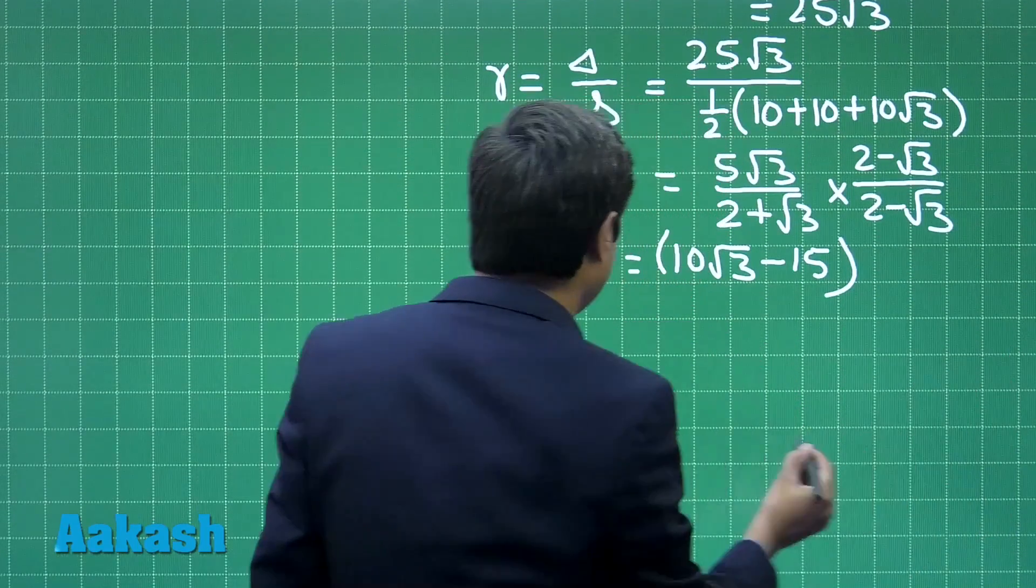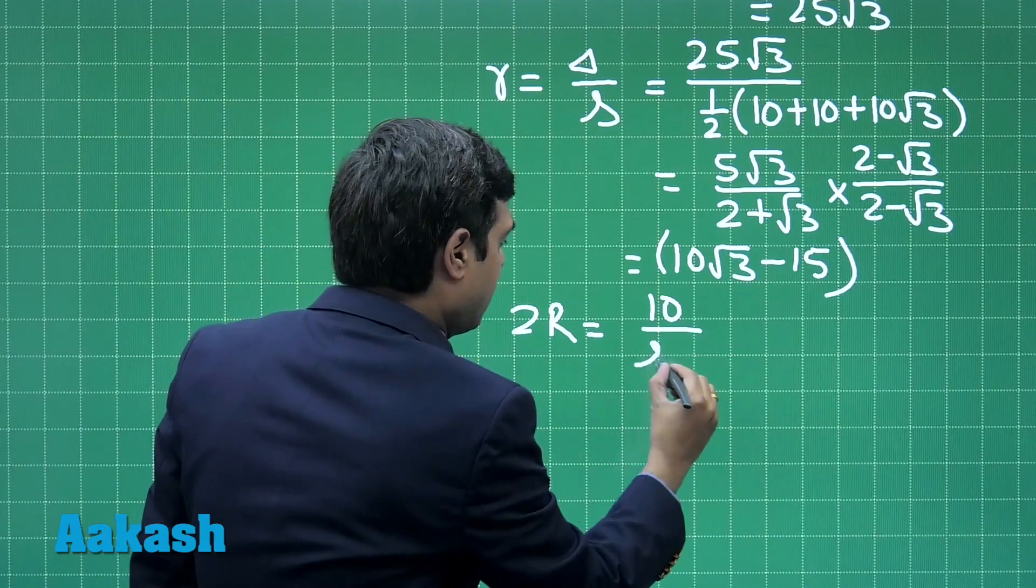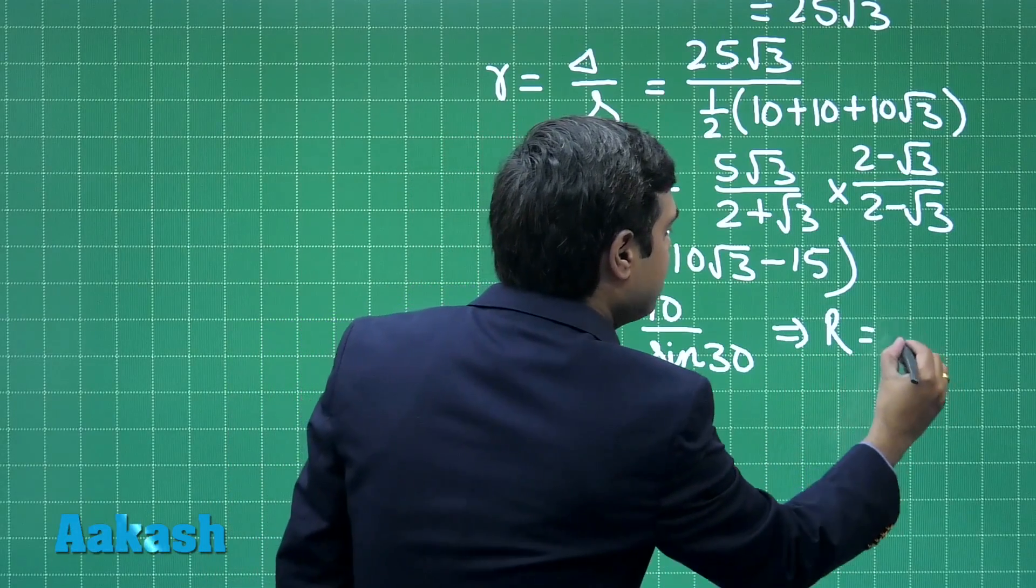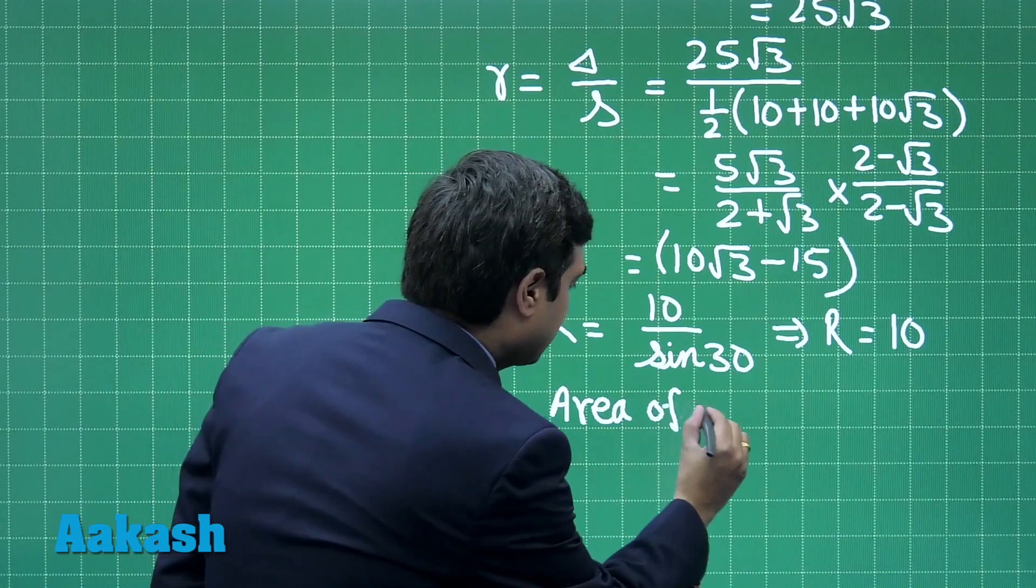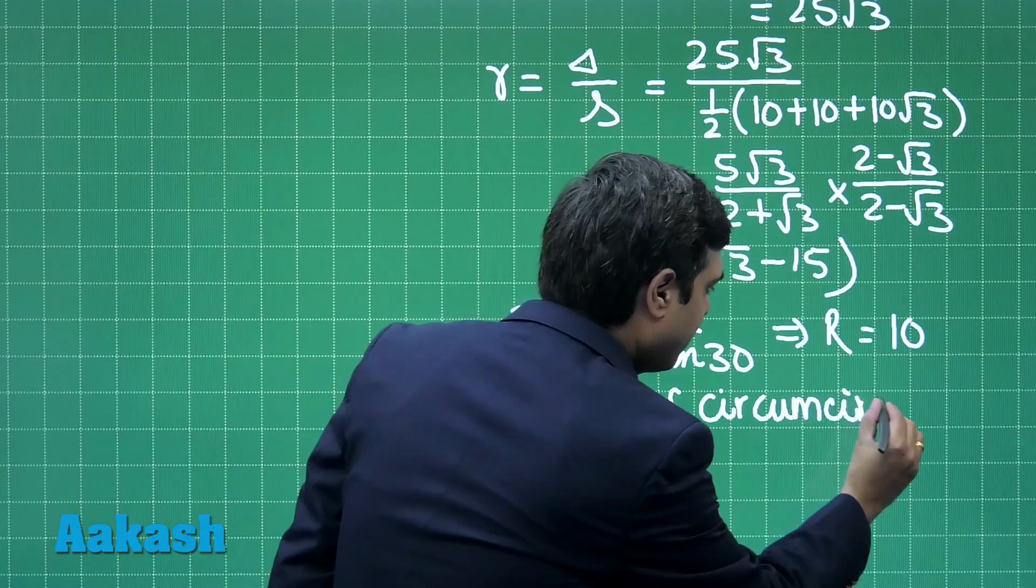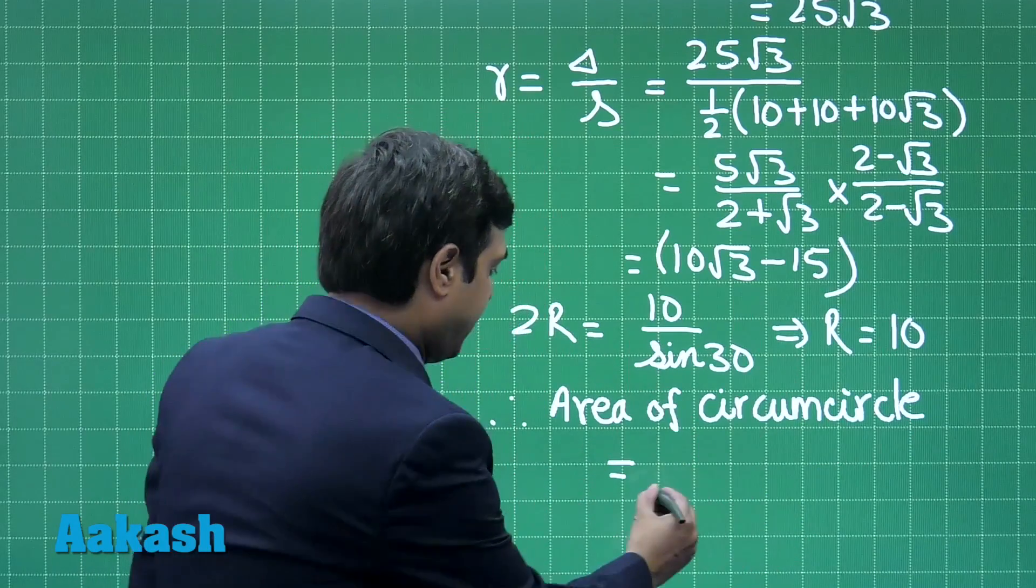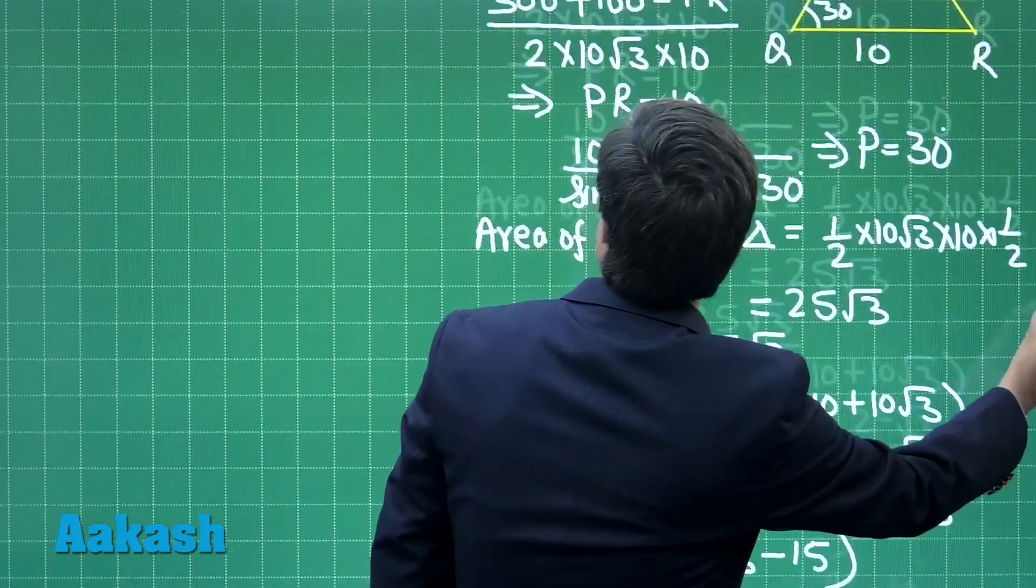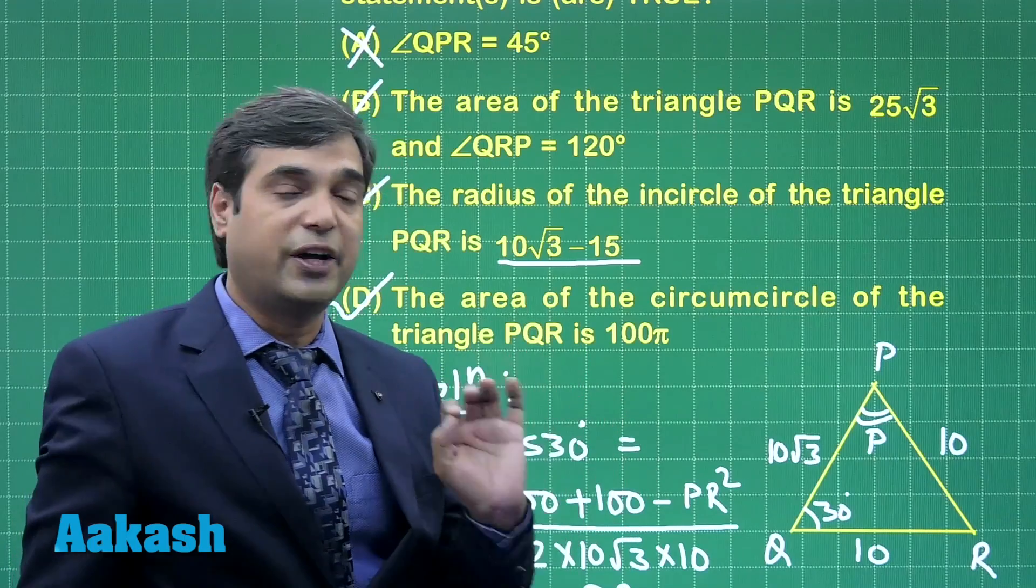From this triangle we can see, let us consider 10 upon sin 30, this is equal to 2r, giving us r equals 10. Therefore area of circumcircle obviously for this triangle is equal to pi r square, that is 100 pi, meaning that option D is also correct which says the area of the circumcircle of the triangle PQR is 100 pi.